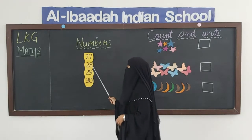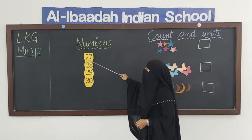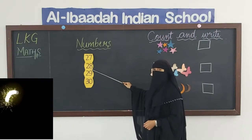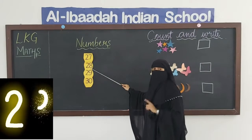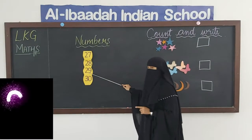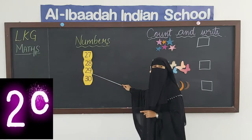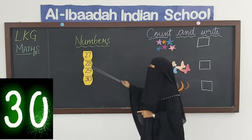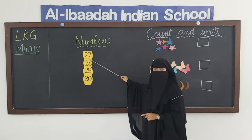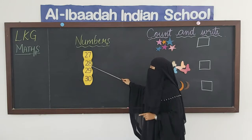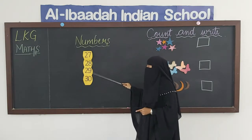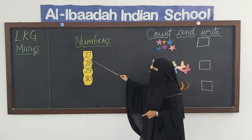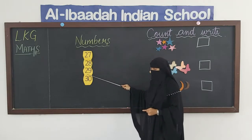We have numbers from 27 to 30. Now: 27, 28, 29, 30. Again: 27, 28, 29, 30.